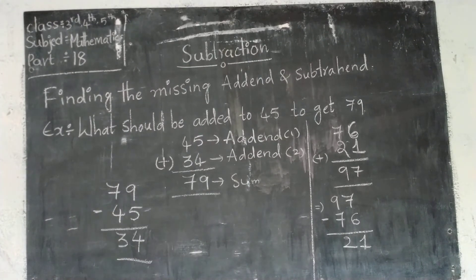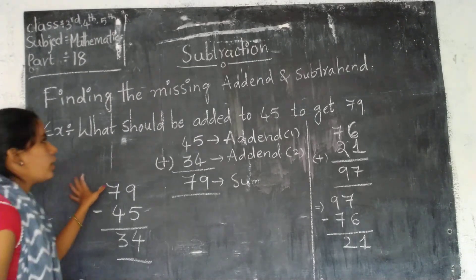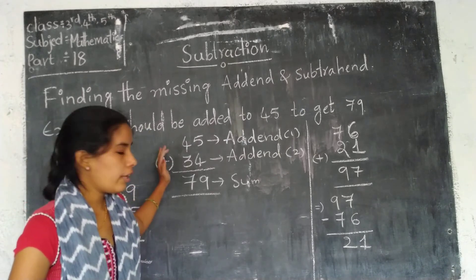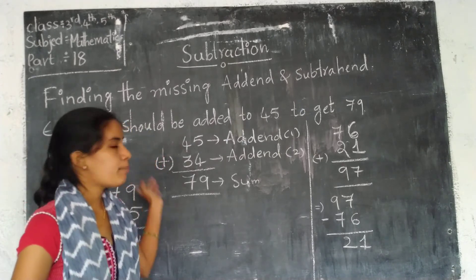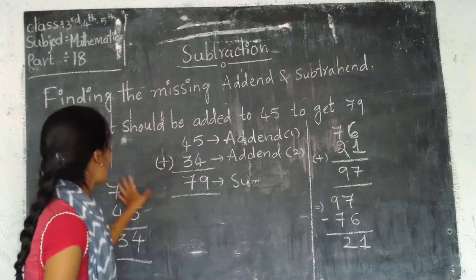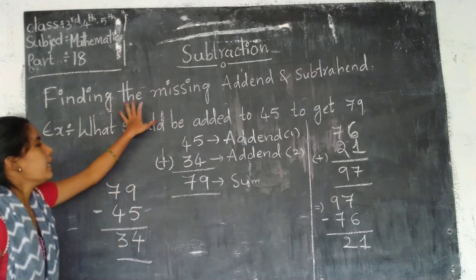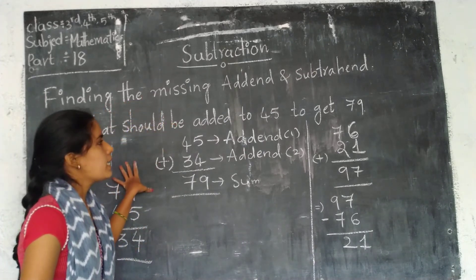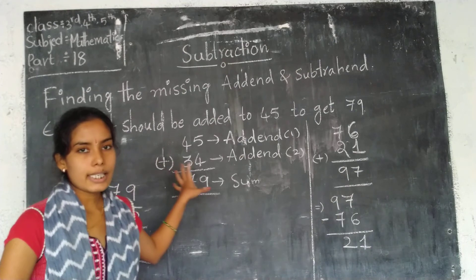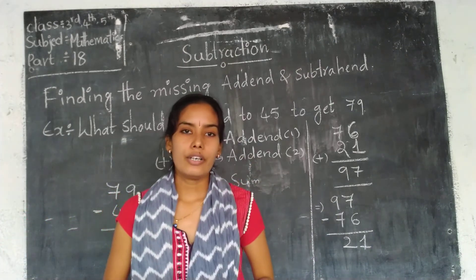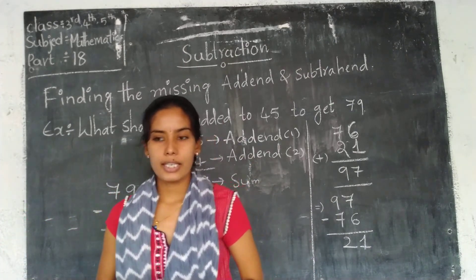Okay children. In today's class we covered the properties of subtraction, how to check subtraction through addition, and how to find the missing addend. The next class we will discuss the remaining topics. Thank you.